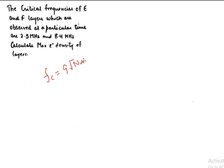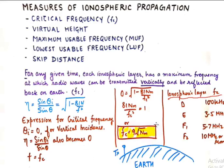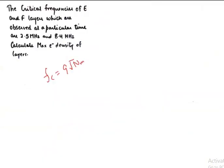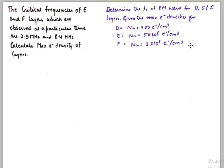These could be two marks numericals. The critical frequencies are given for E and F layers, 2.5 megahertz and 8.4 megahertz. We need to calculate the maximum electron density. So you can use that formula f_c is equal to 9√Nm that we just saw previously.